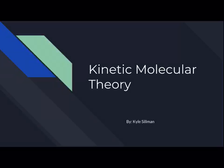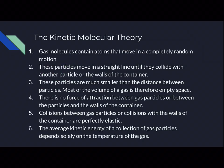There are six theories that go along with the kinetic molecular theory. Number one, gas molecules contain atoms that move in a completely random motion. Two, these particles move in a straight line until they collide with another particle or the walls of the container. Three, these particles are much smaller than the distance between particles, so most of the volume of the gas is therefore empty space. Four, there is no force of attraction between gas particles or between the particles and the walls of the container. Five, collisions between gas particles or collisions with the walls of the container are perfectly elastic. Six, the average kinetic energy of a collection of gas particles depends solely on the temperature of the gas.